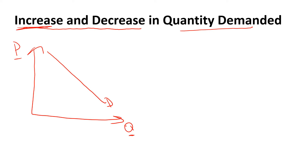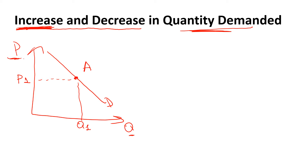Let's suppose I'm going to show you increase in quantity demanded. Remember, quantity demanded and demand are two different things. If I take a certain point on the graph, that's going to be my quantity demanded. The certain point corresponds to a certain price, price one, and to a certain quantity, quantity one. What is going to change my quantity in general? The price of the product. If the price of the product is changing, then quantity demanded is going to change.